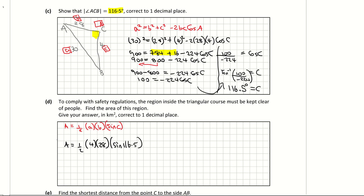Area = ½ × 4 × 28 × sin(116.5°). Working that out on the calculator gives an area of 50.1 kilometres squared. The question wants it to one decimal place, so the answer is 50.1 km².